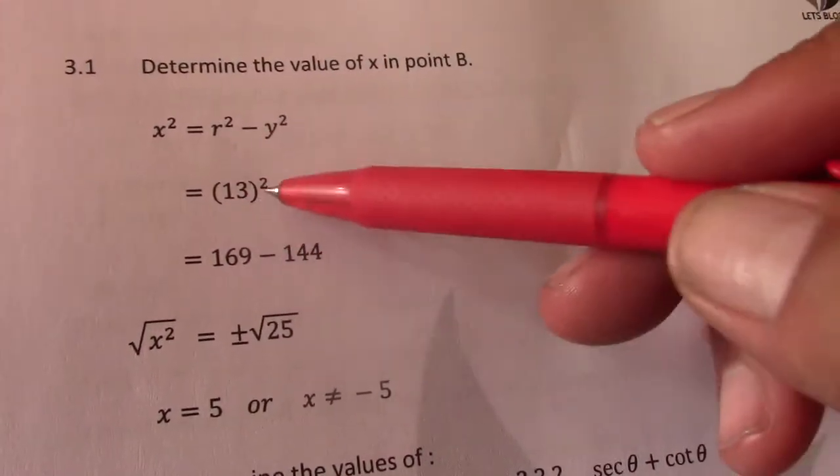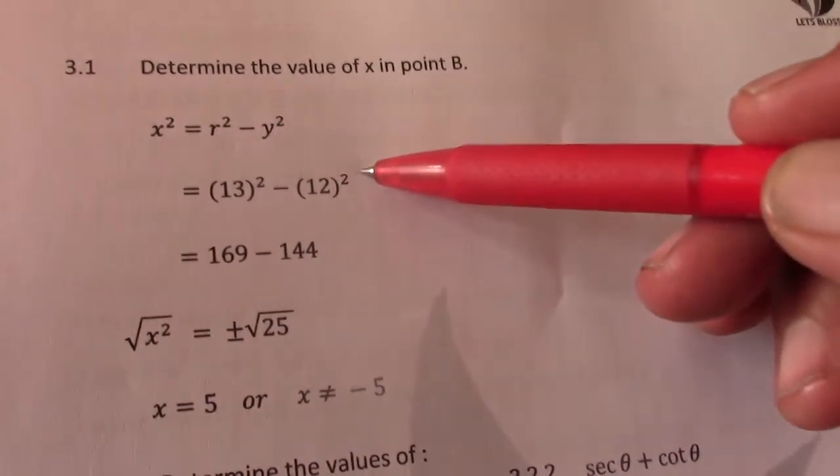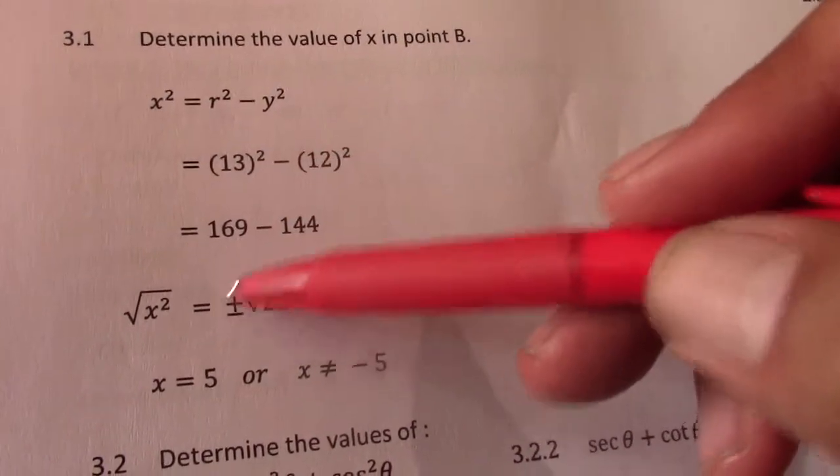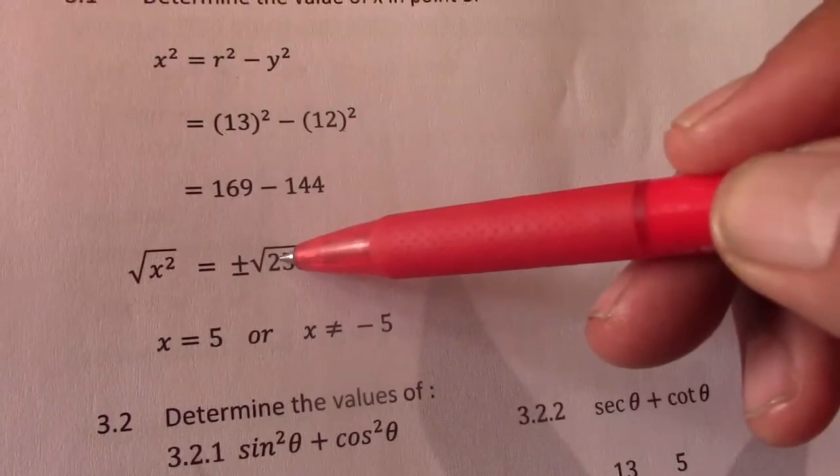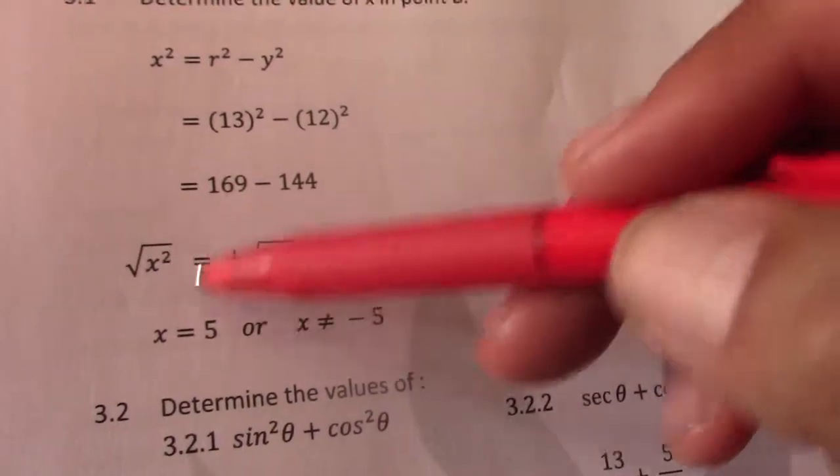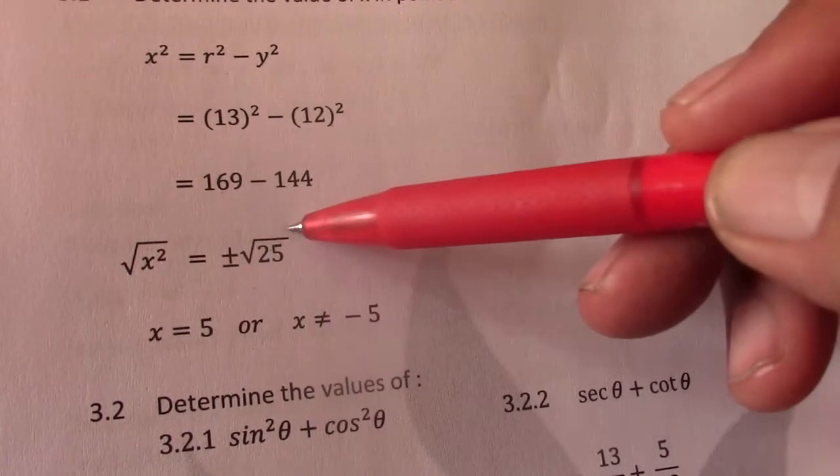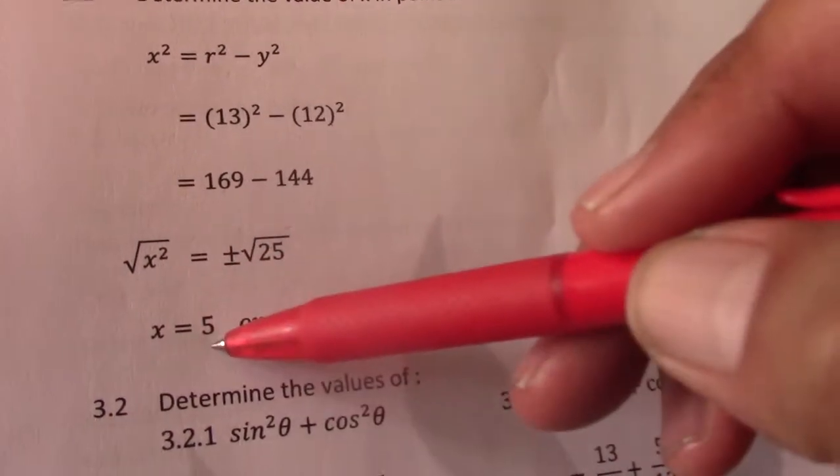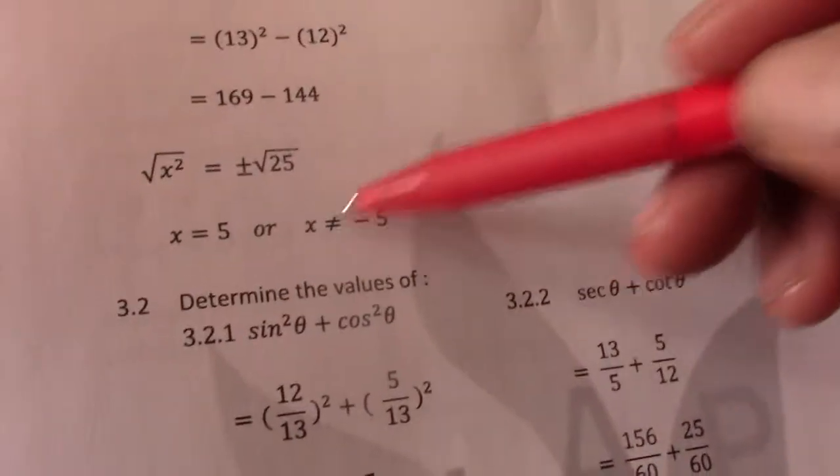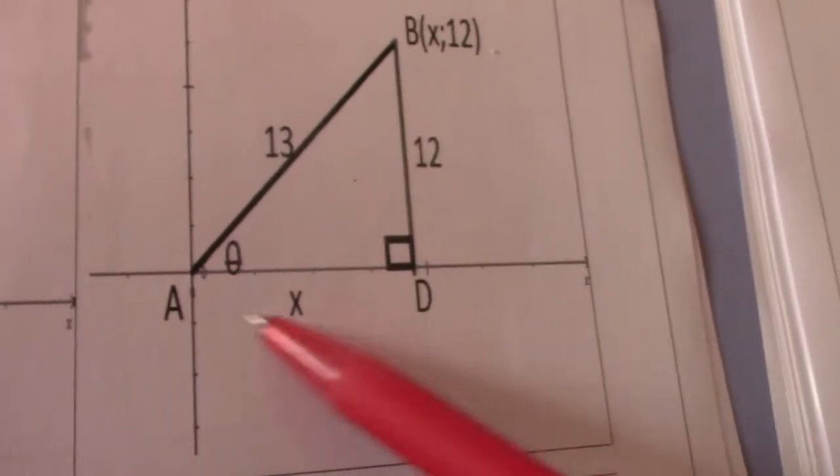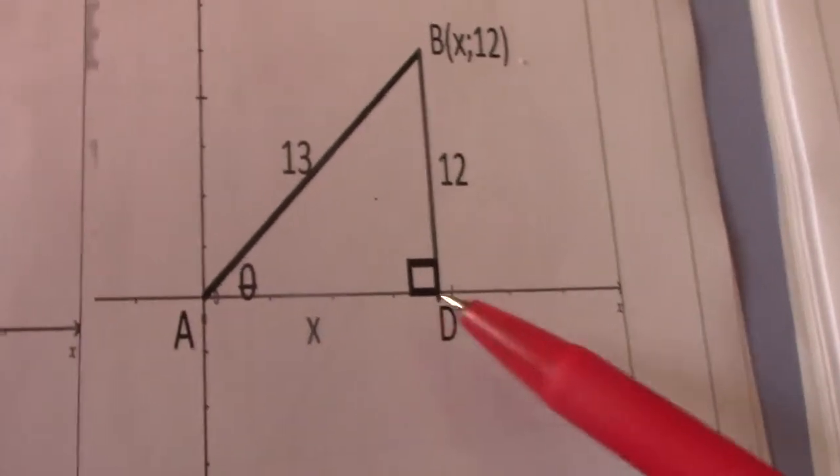So R squared becomes 13 squared minus 12 squared. 13 squared is 169. 12 squared is 144. If I subtract that 2 I am left to 25. So X squared equal plus or minus square root 25. X equals 5 or X equals negative 5. Take note X can't be negative 5 because this is in the first quadrant. In the first quadrant my X values are positive.